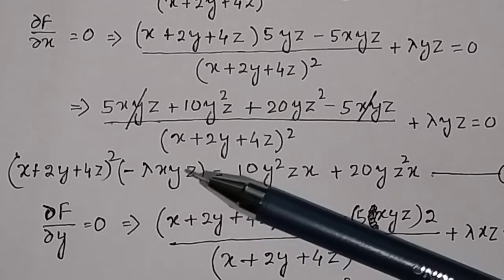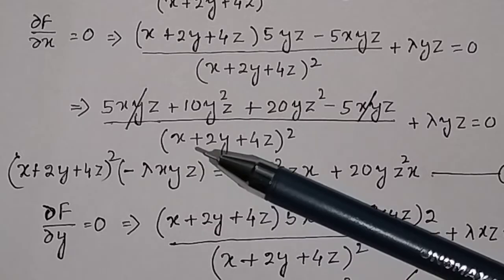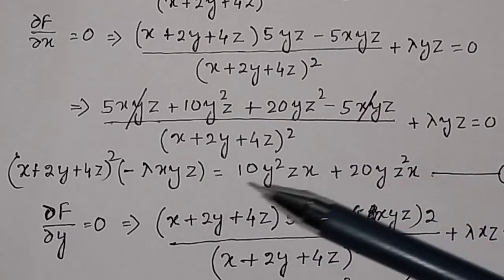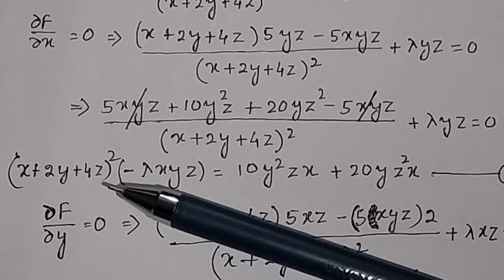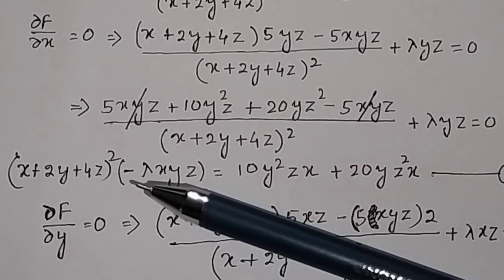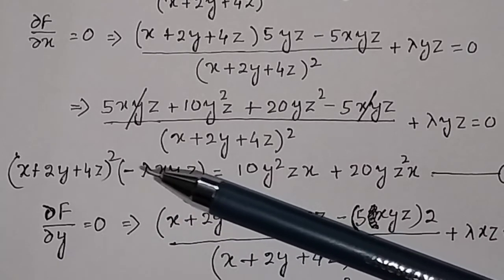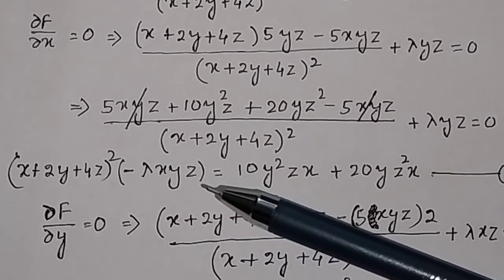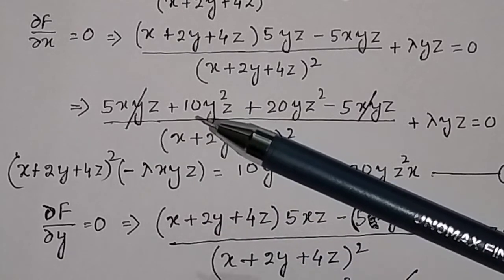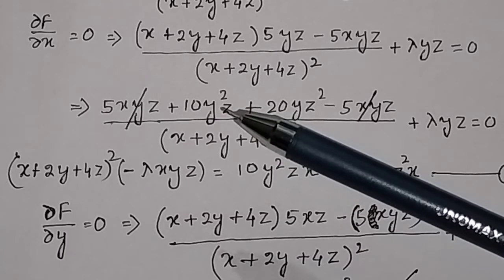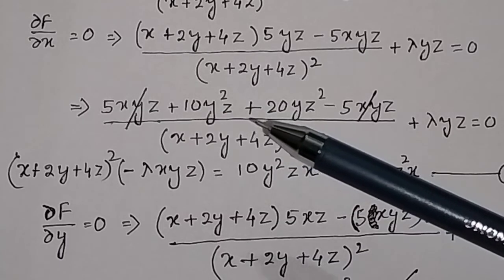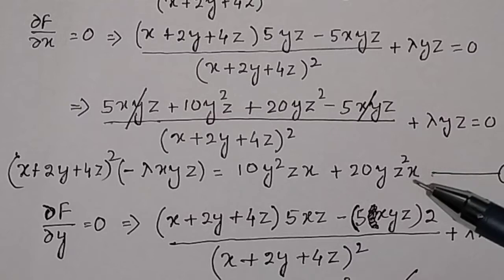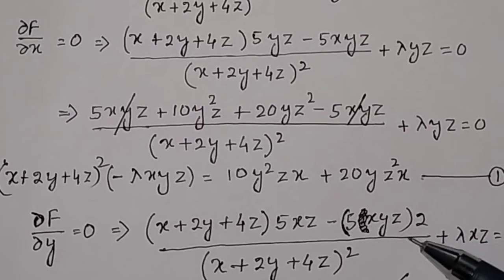Multiplying x on both sides, we get (x plus 2y plus 4z) squared times lambda times xyz on the left, and the right-hand side equals 10y squared z plus 20yz squared. This is equation number 1.